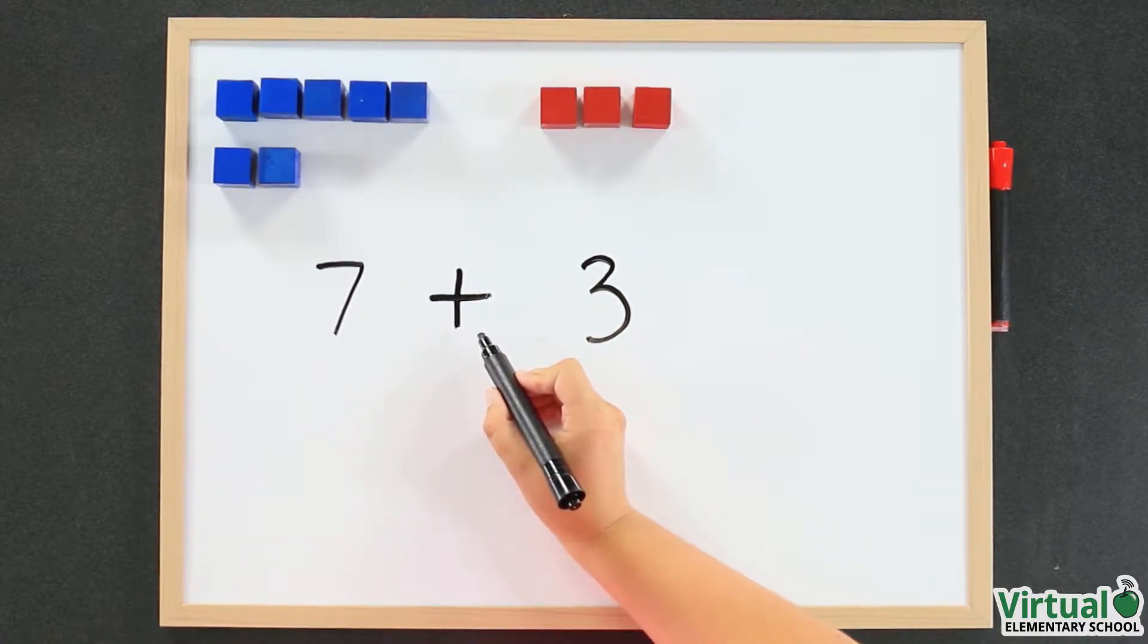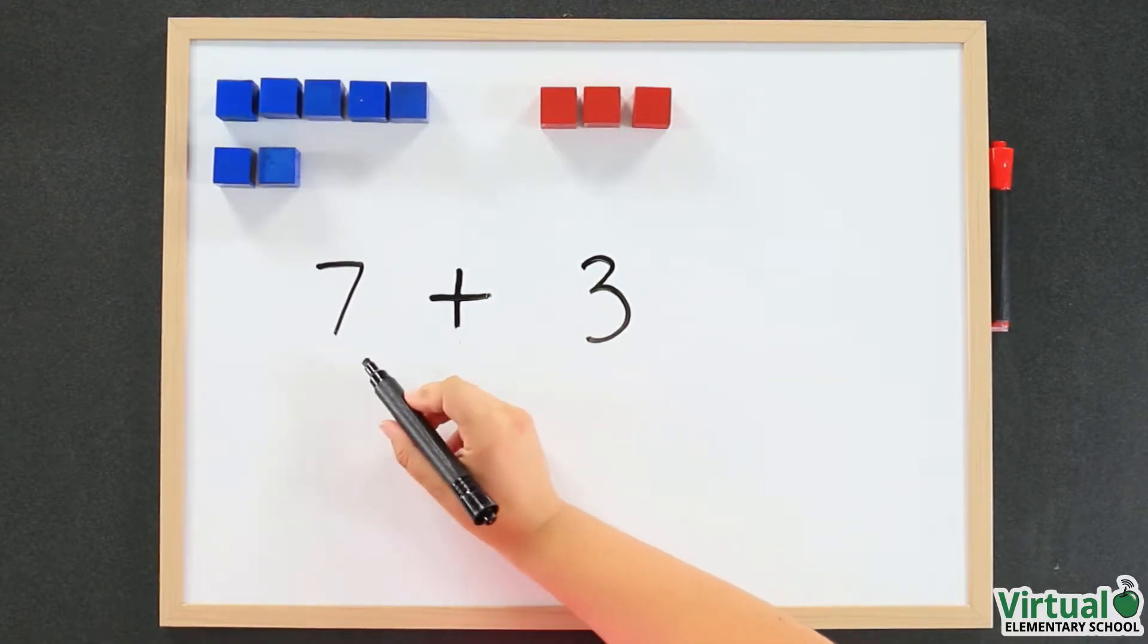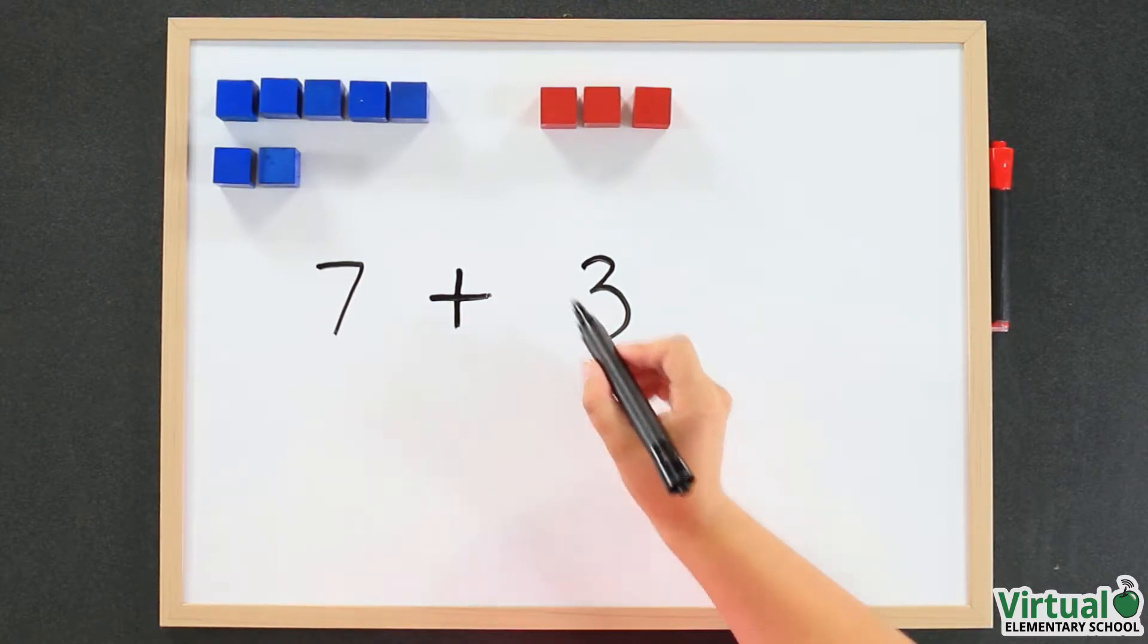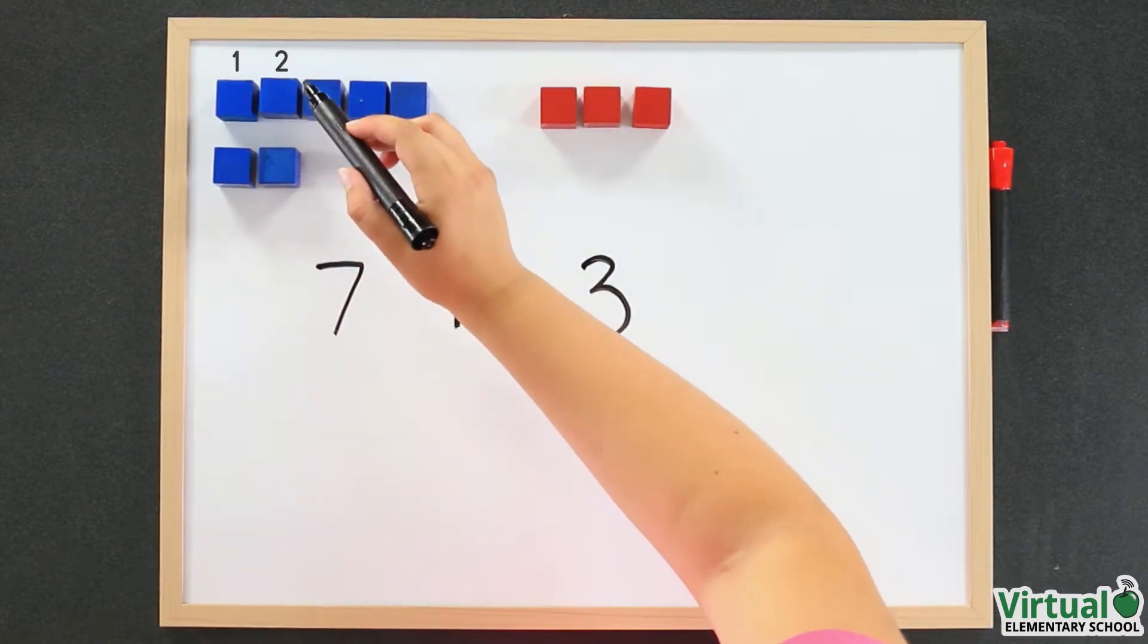This symbol is called a plus sign. It shows that we are adding seven and three together. Let's count: one, two, three, four, five, six, seven.